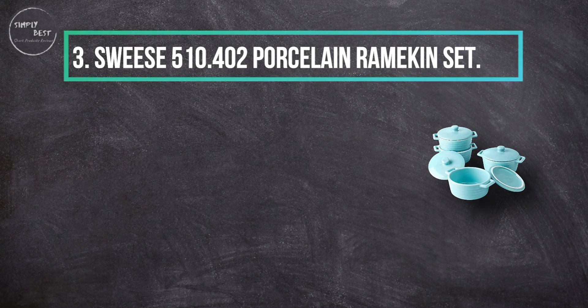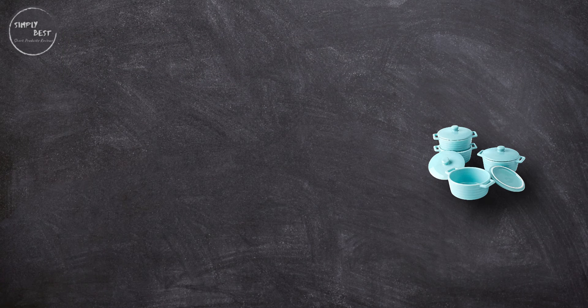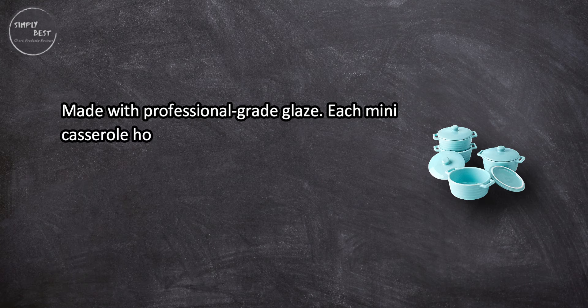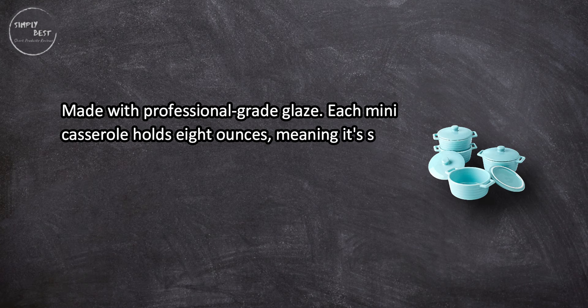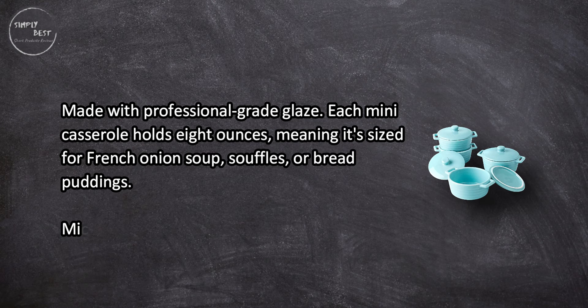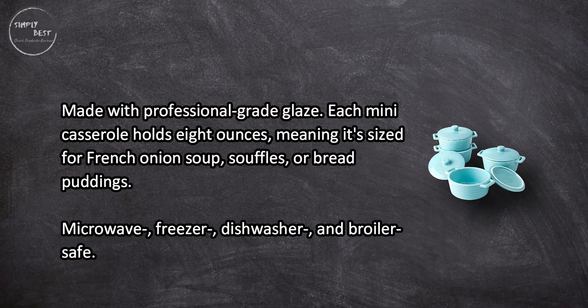Swiss 510.402 porcelain ramekin set. Made with professional-grade glaze, each mini casserole holds eight ounces, meaning it's sized for French onion soup, souffles, or bread puddings. Microwave, freezer, dishwasher, and broiler safe.